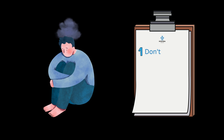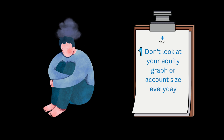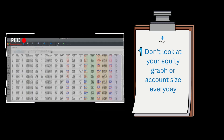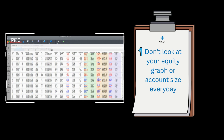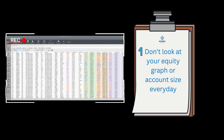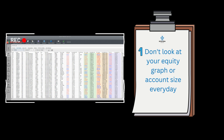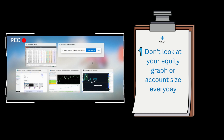Now we'll move on to the don'ts. Number one: don't look at your equity graph or account size in your broker every day. The reason we say this is when you do your testing or you look at the results, you don't actually look at what happens day in, day out. Because if you did, you would see from this statement of our algorithm that losses can come quite a lot and they can happen in quite a regular sequence.